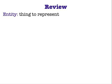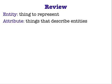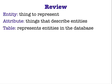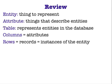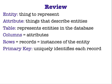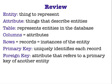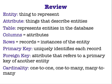Let's review some of the terms and concepts we've covered in this video. An entity is a thing that we want to represent in a database. An attribute describes an entity. Each entity is represented in a database as a table. The columns of the table are the attributes, and the rows of the table are the individual instances of that entity. A primary key is needed to uniquely identify each row of a table, and a foreign key is an attribute of one entity that refers to a primary key of another entity. Finally, the cardinality of a relationship may be one to one, one to many, or many to many.